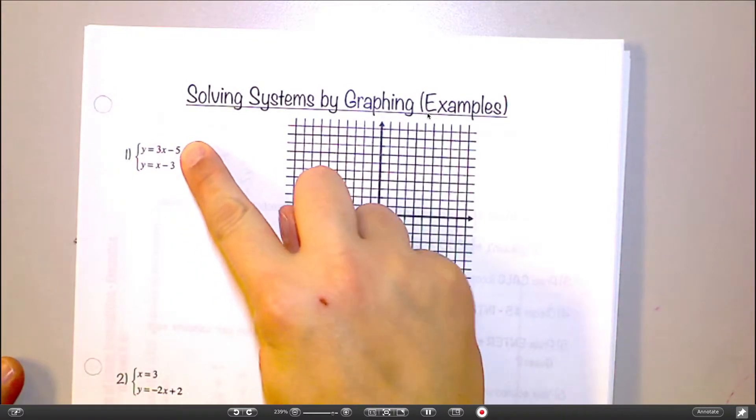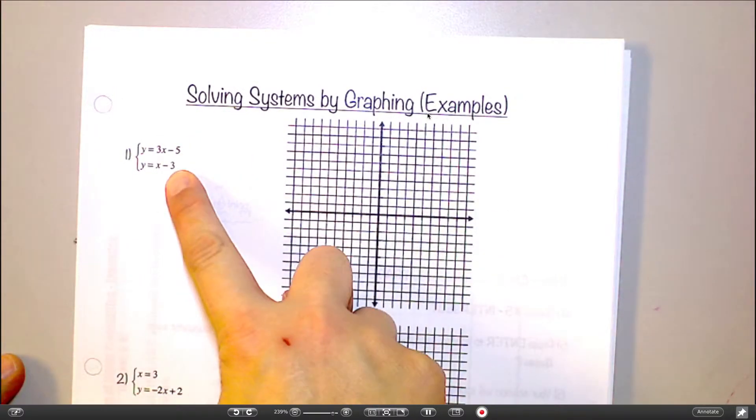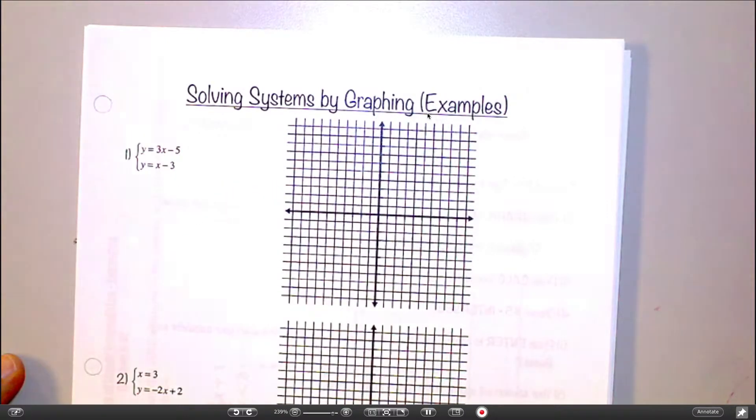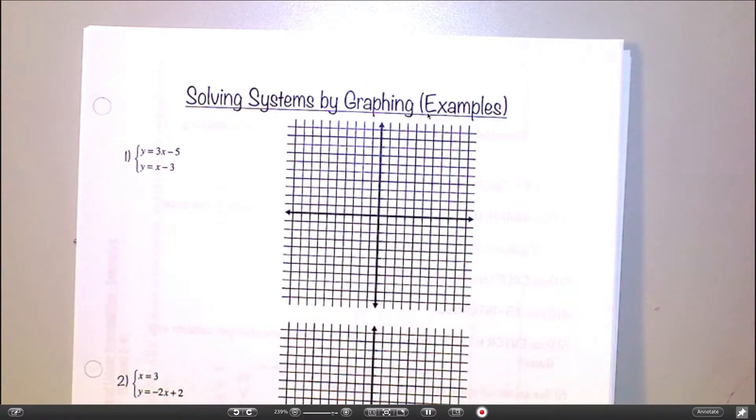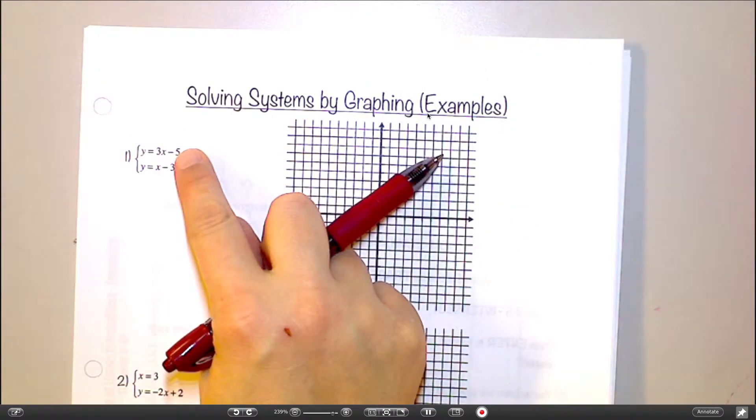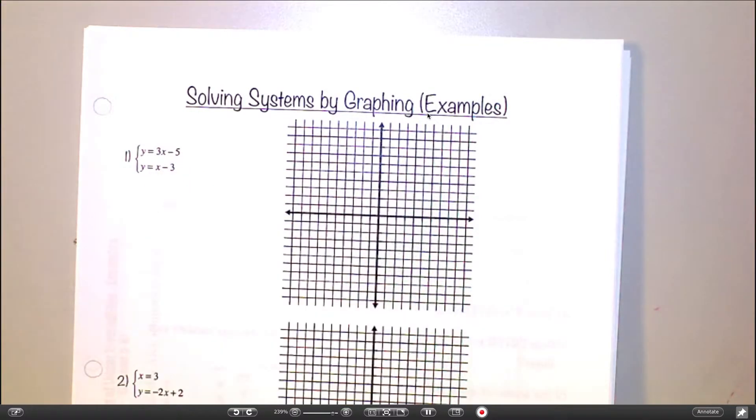So this equation has a ton that work. This equation has a ton that work. The solution to the system is the one solution that makes both of them true at the same time. So if I graph this line and graph this line, where do you think I'm going to find one point that they have in common?